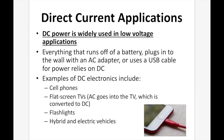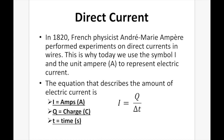Direct current applications. DC power is widely used in low voltage applications. Everything that runs off a battery, plugs into the wall with an AC adapter, or uses a USB cable for power relies on DC. Examples include cell phones, flat screen TVs, flashlights, hybrids, and electric vehicles. In 1820, French physicist André-Marie Ampère performed experiments on direct current in wires. This is why today we use the symbol I and the unit ampere, or A, to represent electric current. The equation is I = Q / Δt, where I is in amps, Q is charge in coulombs, and t is time in seconds.